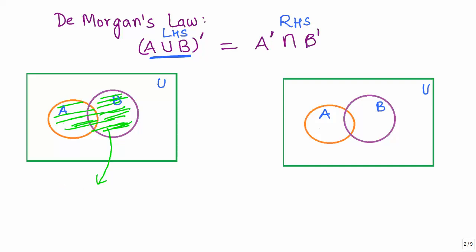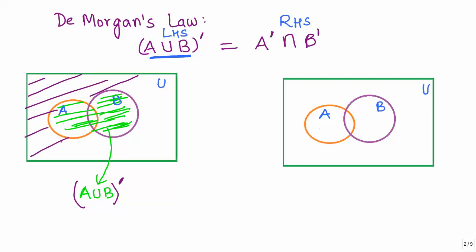Now, what is going to be the complement of A union B? The complement of A union B is all those elements that are not contained within A union B, which means everything outside both of these circles. So this part outside represents A union B complement. We got everything that is outside these two circles — elements that do not fall within sets A or B — as A union B complement.